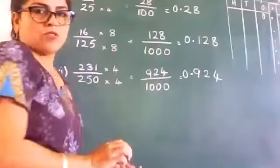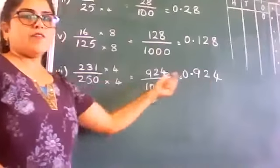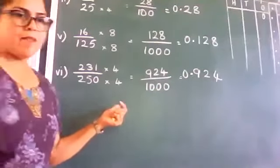So that's how you change the fractions to decimal numbers if the denominator is not the power of 10.